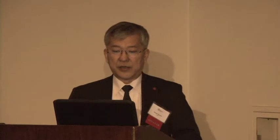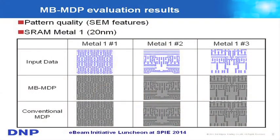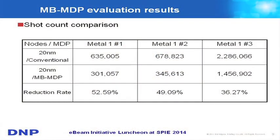This is an example of the pattern quality results for SRAM features. I picked up the SRAM metal one features at the 20-nanometer node, and you can see that the MVMDP mask features and the conventional MDP mask features have very equivalent mask fidelity. On the other hand, the shot-count reduction is very significant. For metal one features, we can get a reduction rate of more than 50%, which is a very significant shot-count reduction.